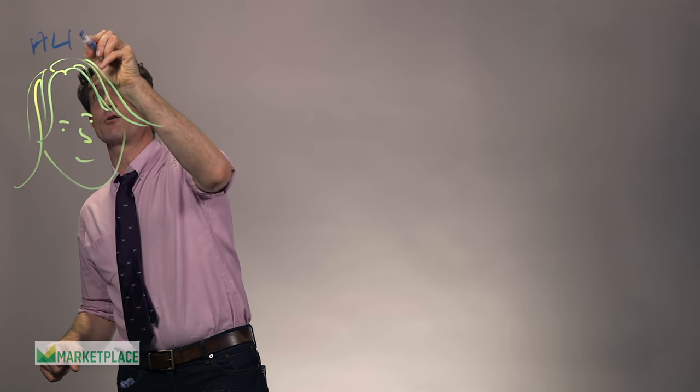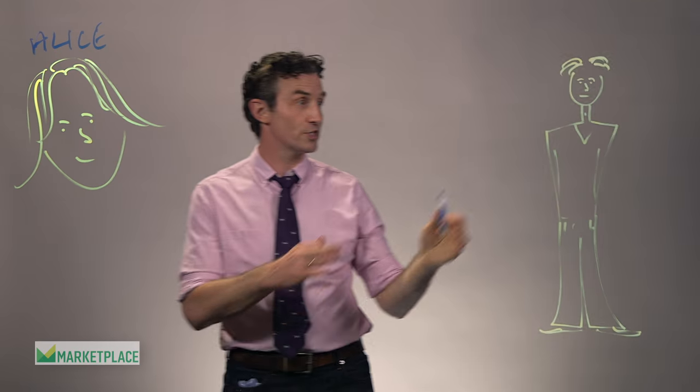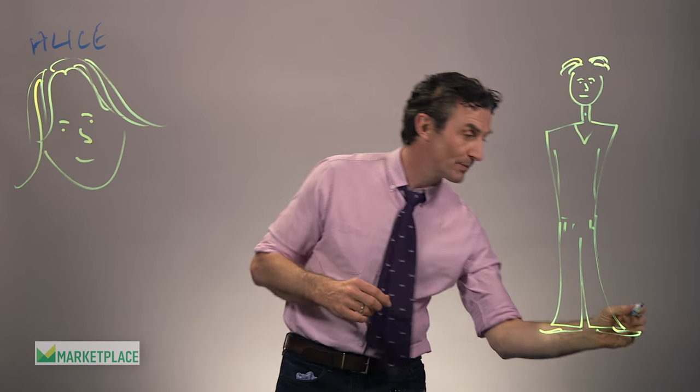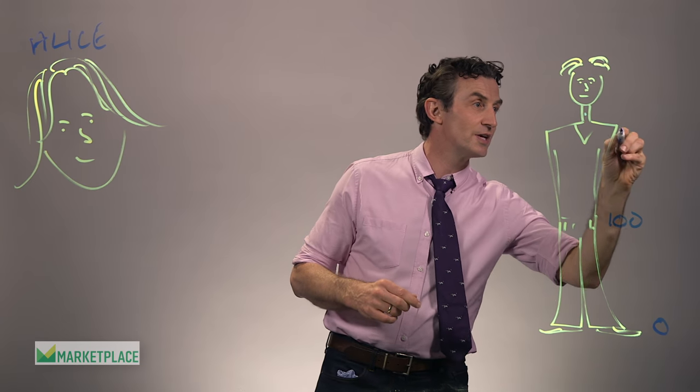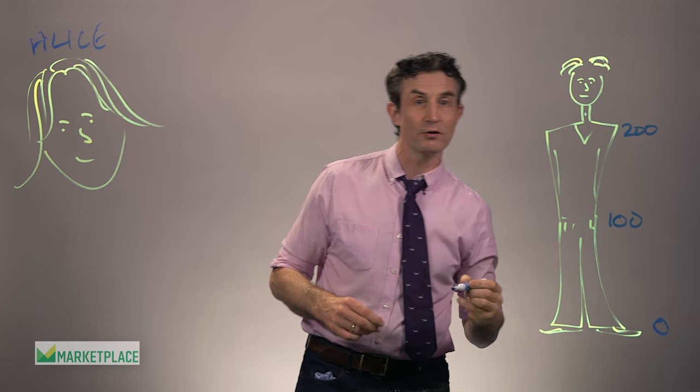So let me explain this by introducing you to a stock investor called Alice. Now, Alice has invested in this stock, which is represented by this young fellow here. His feet are like zero dollars. His waist is like a hundred dollars. And his shoulders are about two hundred dollars.